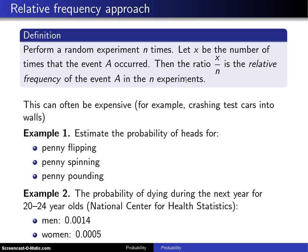We all do this from a young age — we experiment with things, and if the outcome is positive we tend to repeat them, and if the outcome is negative we tend not to. Sometimes this can be a very expensive process. For example, if each experiment is crashing a test car into a wall, then n would be a very small integer.